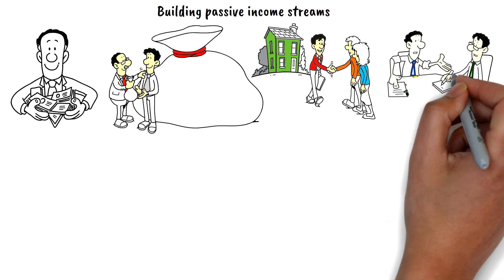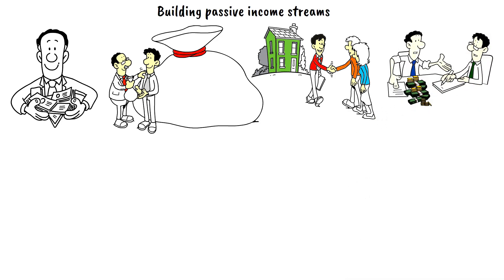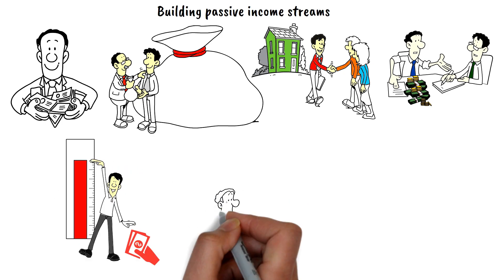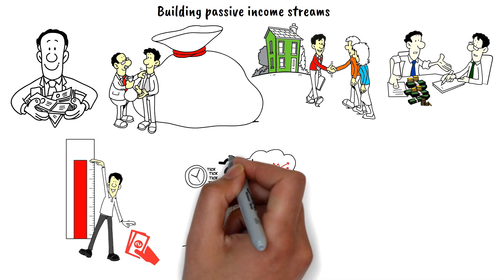dividend income, or income from a business or investment that you own but don't actively manage. Building passive income streams takes time and effort up front, but can pay off in the long run.